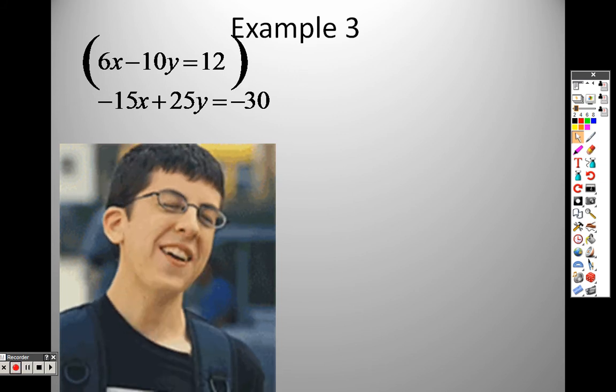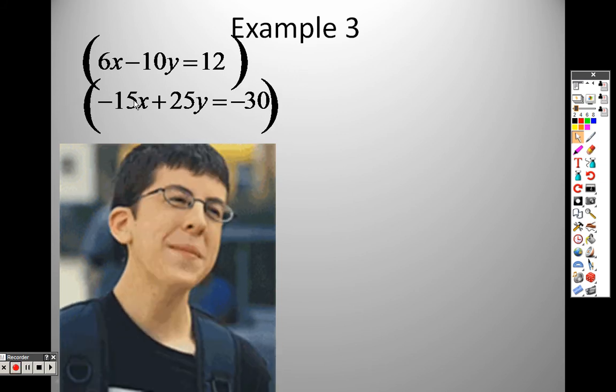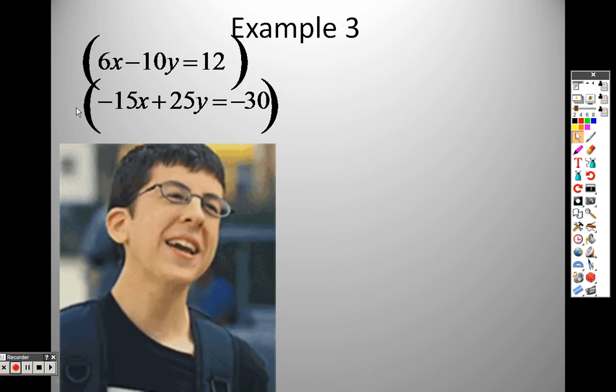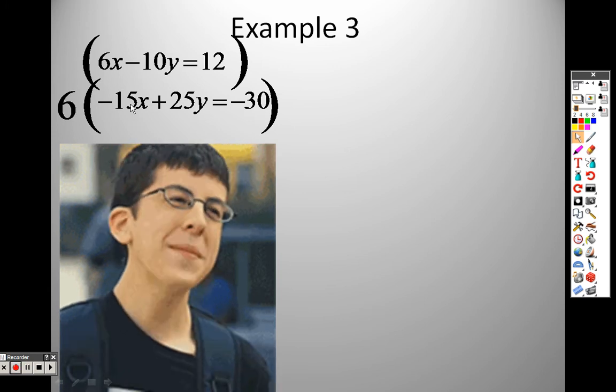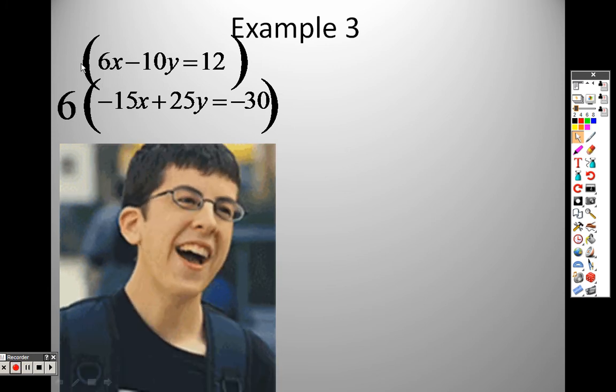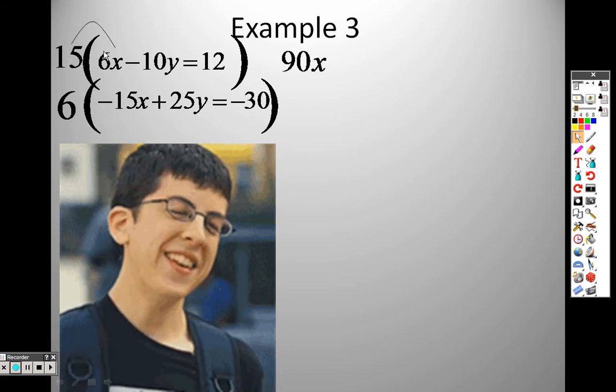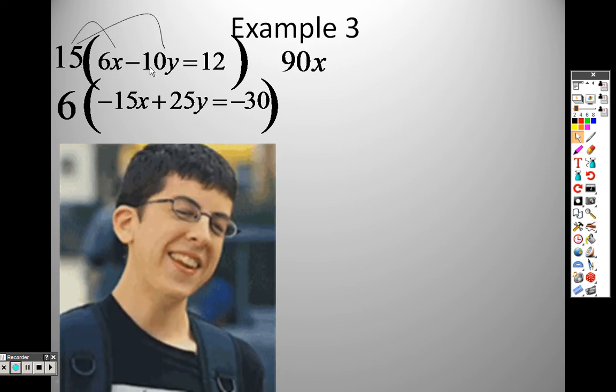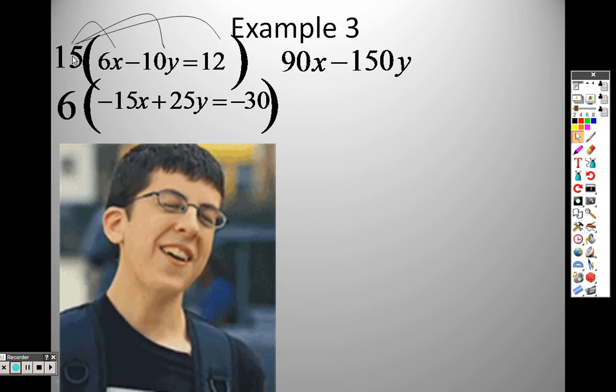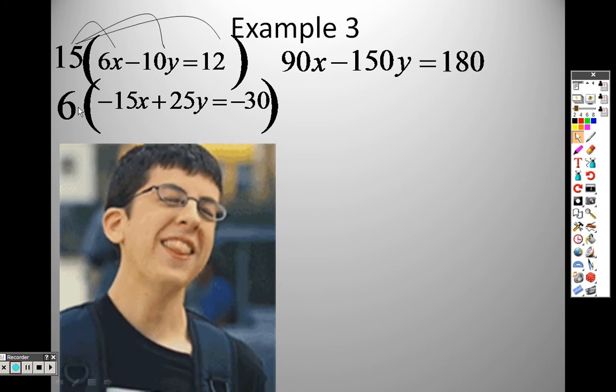So now I go to do this one. I multiply both the top and the bottom. Take whatever I have on top, multiply it on the bottom, which is 6. Take whatever I have on the bottom and do the opposite, so that would make that a 15. 15 times 6 is 90x, 15 times negative 10, negative 150y. 15 times 12, 180.